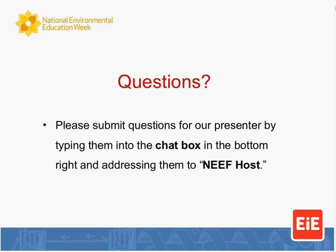From Liz: in the food web activity, how do you have the kids assess how they each depend on the river? One child plays the river. When they start to talk about the river, each child playing an organism is asked: how do you use the river to meet your basic needs? Some use it for shelter, some for water, some are only impacted by eating organisms that live in the river. We have them think about that critically. Does EIE do any educator classes or demonstrations? We do professional development for teachers and teacher trainers — workshops here at the Museum of Science in Boston, and we also travel to your school or location.